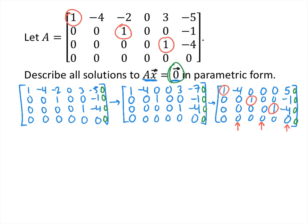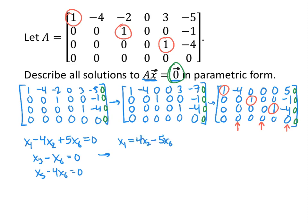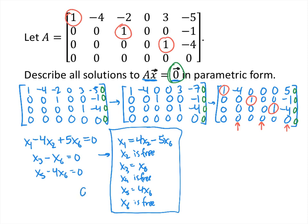Our general solution has the form: x1 minus 4x2 plus 5x6 equals 0. The second row represents the equation x3 minus x6 equals 0. The third row represents x5 minus 4x6 equals 0. Solving for the basic variables: x1 equals 4x2 minus 5x6; x2 is free because we don't have a pivot in column 2; x3 equals x6; x4 is free because we don't have a pivot in column 4; x5 equals 4x6; and x6 is free because we don't have a pivot in column 6. This is the general solution.